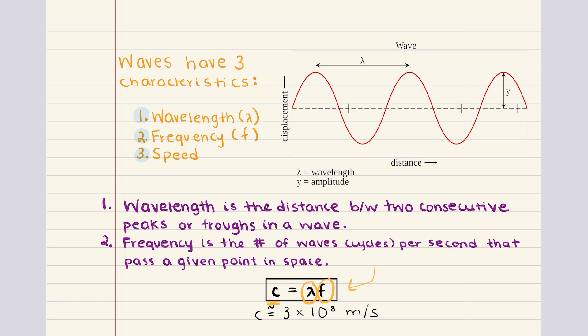The speed of electromagnetic radiation in a vacuum is approximately 3×10⁸ meters per second. Wavelength is defined as the distance between two consecutive peaks or troughs in a wave. Frequency is defined as the number of wave cycles passing a specific point in space per second. The relationship between wavelength and frequency is inversely proportional — as wavelength decreases, frequency increases, and vice versa.